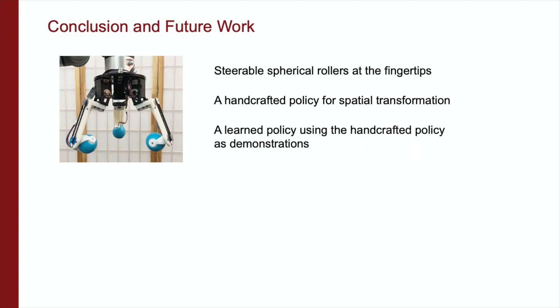In conclusion, we presented Roller Grasper V2, a new design for a grasper based on steerable spherical rollers located at the fingertips. The hardware design choices and engineering details were provided. A handcrafted control policy was constructed that utilized the active surfaces of the rollers to transform an object to an arbitrary target pose. This control policy was used to generate expert trajectories in order to develop an imitation learning based policy. Both policies were evaluated in simulation and experimentally on the hardware.